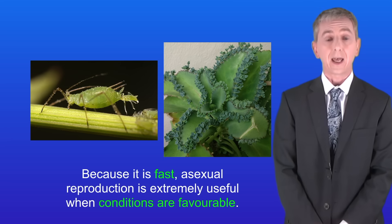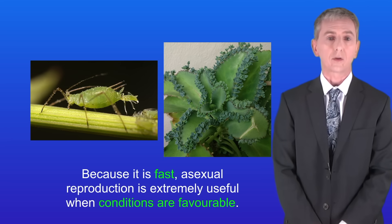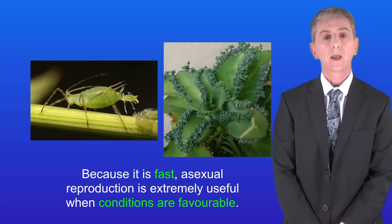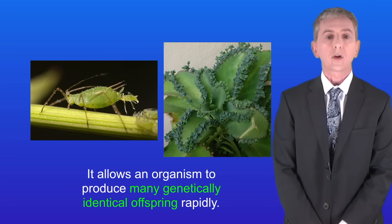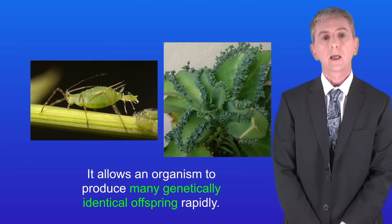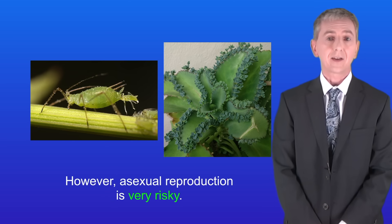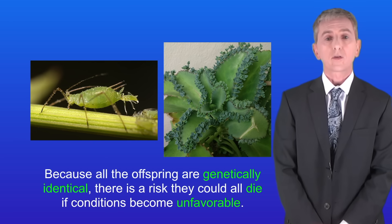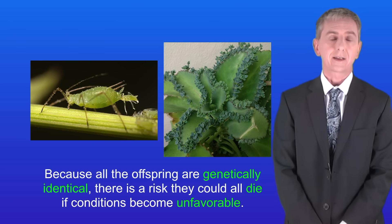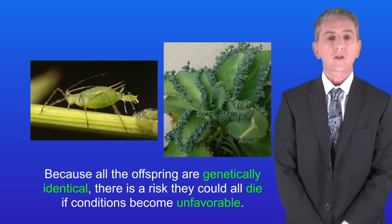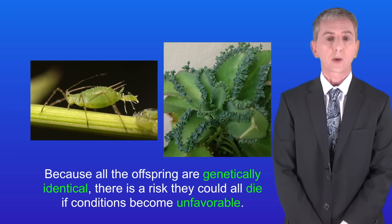Because it's fast, asexual reproduction is extremely useful when conditions are favourable. It allows an organism to produce many genetically identical offspring rapidly. However asexual reproduction is very risky. Because all the offspring are genetically identical, there's a risk they could all die if conditions become unfavourable.